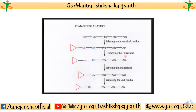In Edman degradation, the Edman reagent connects with one amino acid at a time, forms a stable product, and the first amino acid residue is removed. Using chromatography, we determine and quantify what that amino acid is. Then the next amino acid becomes the new N-terminus, and the same process is repeated — label, remove, identify — one by one, to determine the complete order of the peptide.